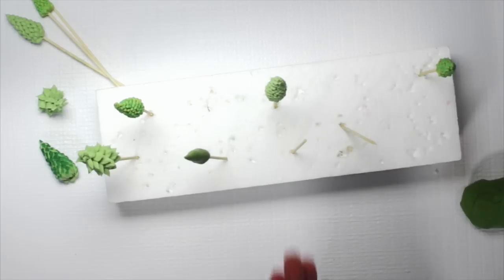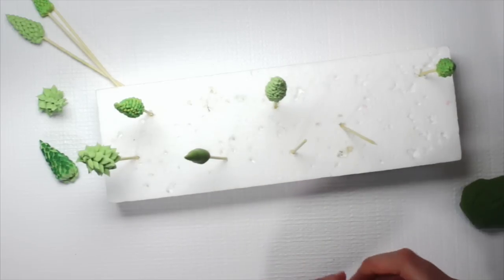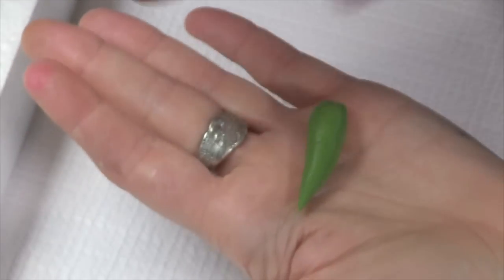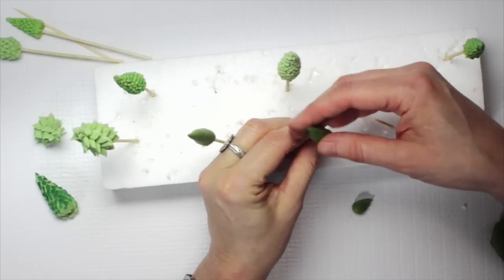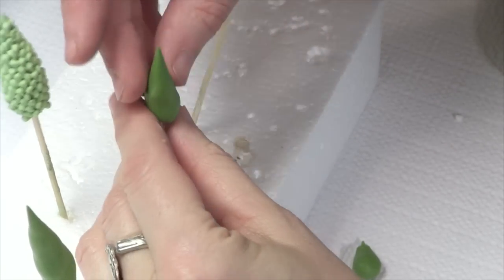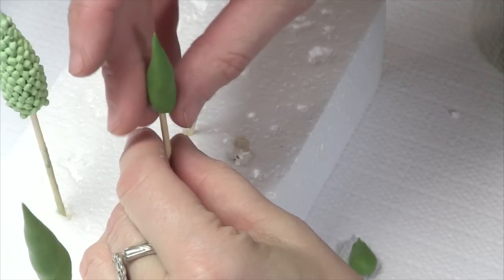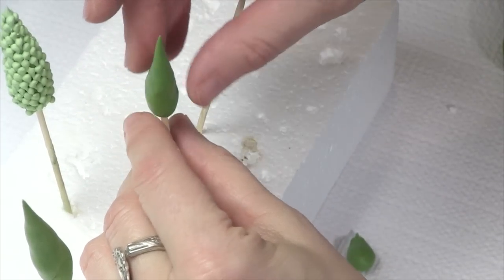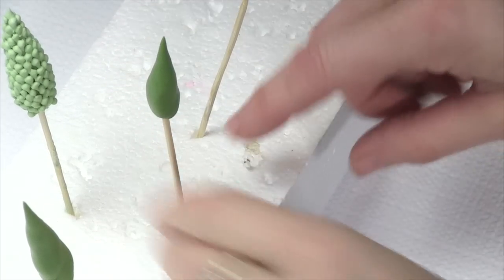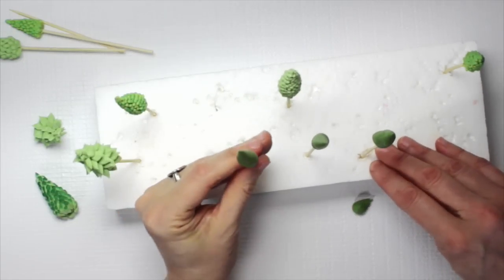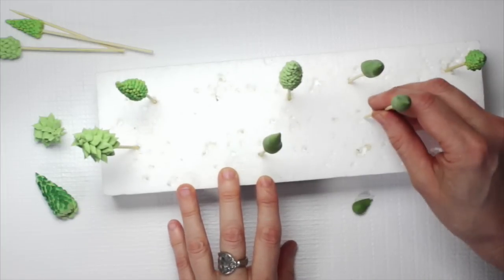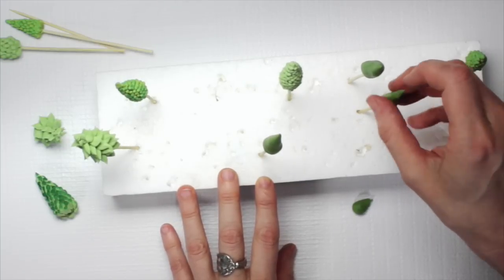So I'd like to start by making a fondant core to support what I'm piping. I'm just using green fondant, something that's going to match what I'm going to pipe with. The larger the core, the larger the tree. I'm rolling it so it's pointed at the top and there's a wider base. Then I'm sticking it just on the very end of these toothpicks because you want to be able to remove the toothpick easily later. Then I'd let them dry a little bit before I start piping, maybe a few minutes.